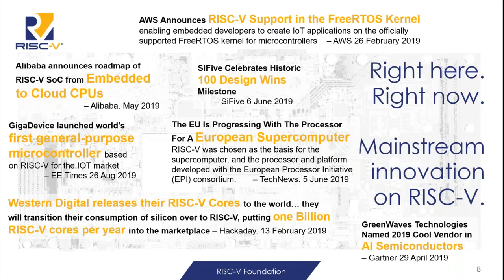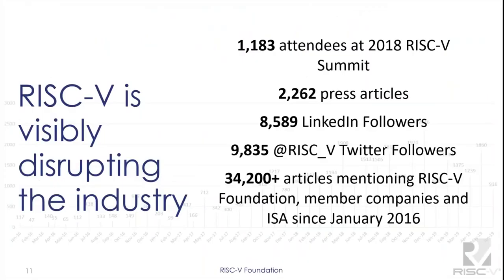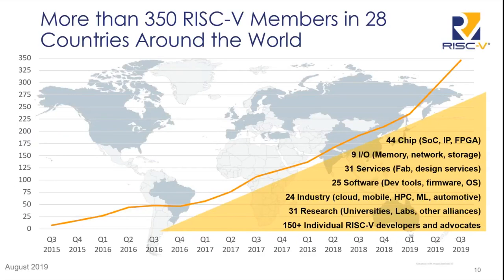This is a nice little picture, and I guarantee it's already out of date. It's really almost exponential growth, as we'll see in a moment. Here are some interesting metrics. I said it was exponential growth — it's not quite exponential, but it's on that curve. It now has more than 350 members in 28 countries around the world, which is really great.